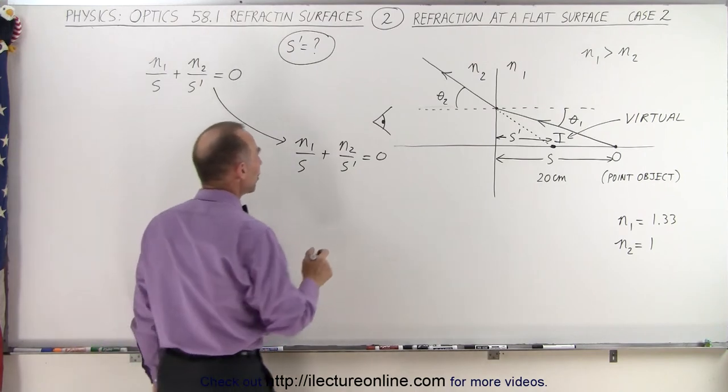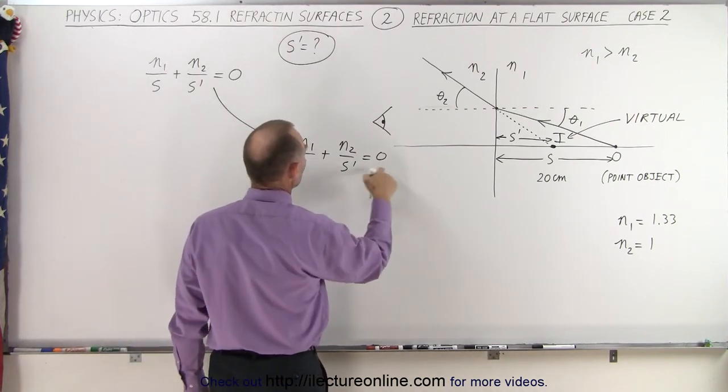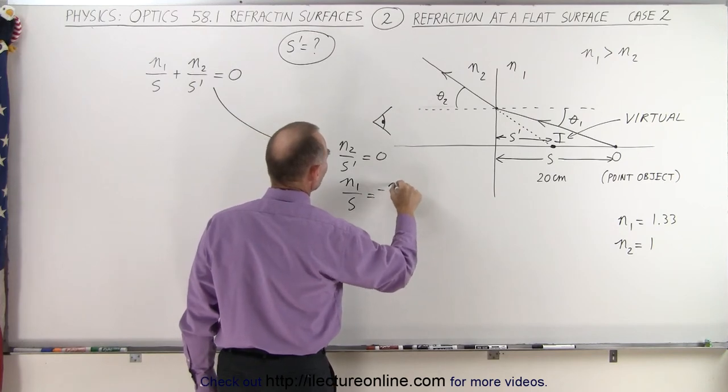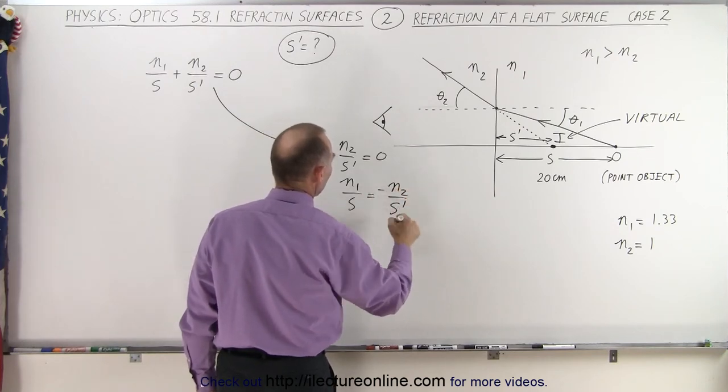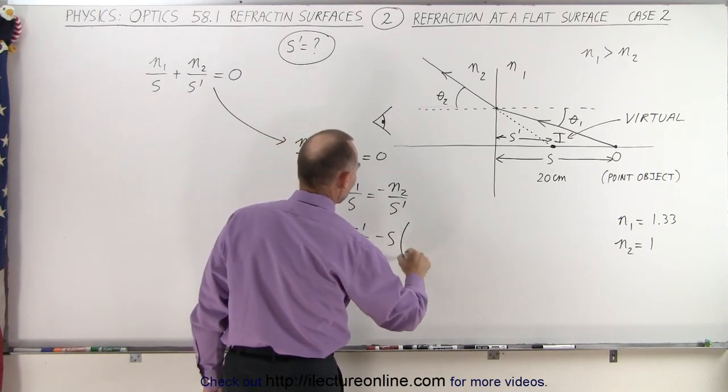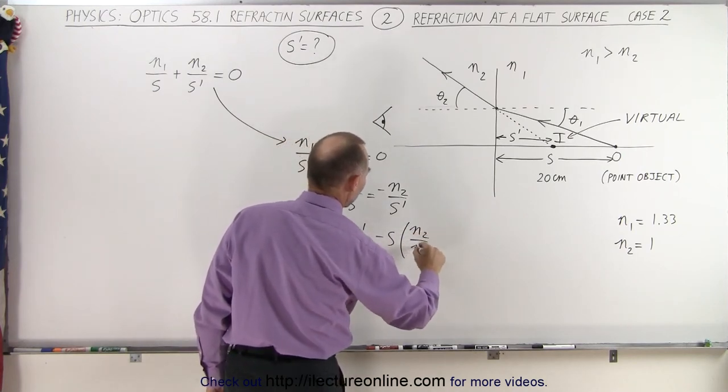So we're going to move this to the other side. So we have N1 over S equals minus N2 over S'. Moving that over here, we have S' is equal to negative S times the ratio of N2 over N1.